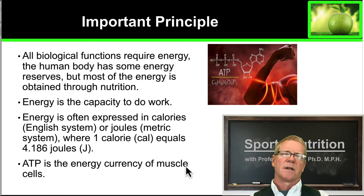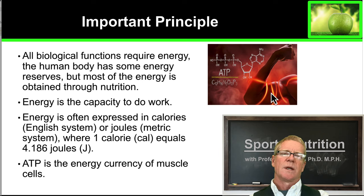Inside your body, adenosine triphosphate or ATP is the currency of energy inside your muscle cells. We need ATP to be able to complete muscle contractions and to produce work.